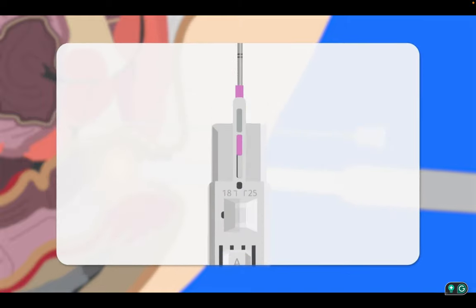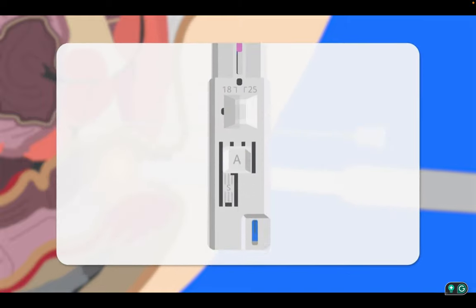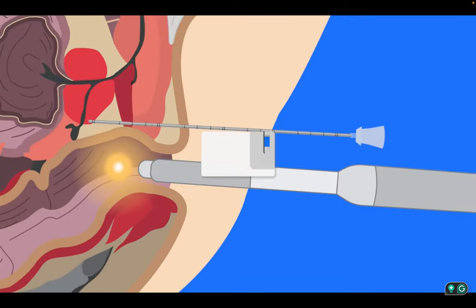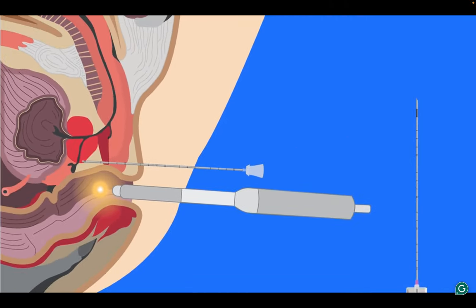The BD Marquis device is then prepared by pulling back twice, ensuring the fire indicator is completely blue. The first pull back opens the aperture and the second fully loads the device ready for fire. The 18 gauge biopsy needle is inserted through the coaxial device.